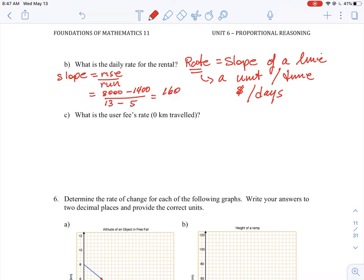So this will give us $1,600 for every 8 days. So this means it costs $200 per day to rent because that's the equivalent of our slope. It's just a simple rise over run calculation. You just have to pick your two points.